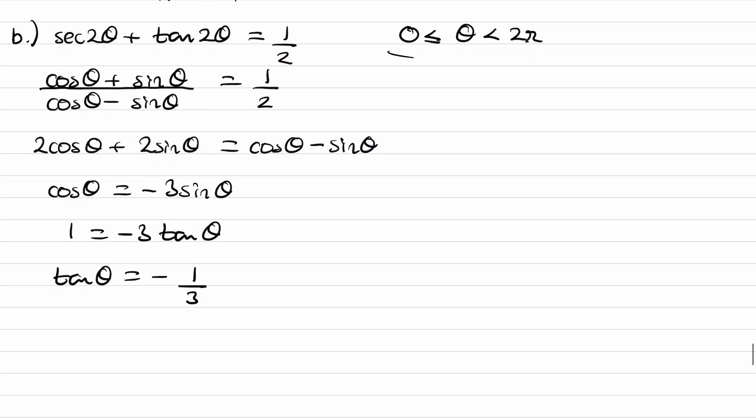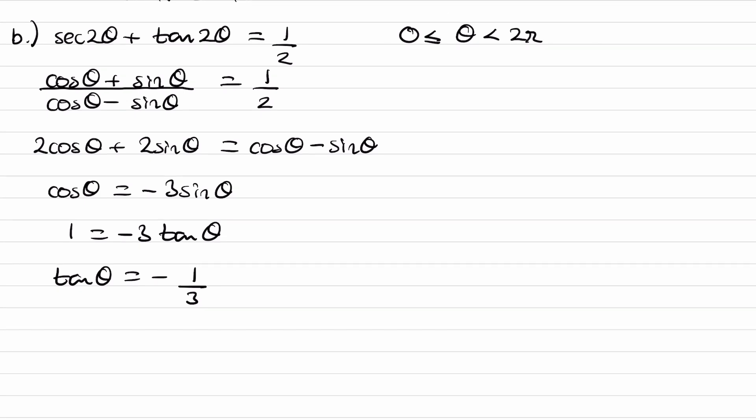We're solving between 0 and 2 pi. Inverse tan of minus 1 third is minus 0.322. And then we can add pi as a tan graph repeats itself every pi radians. Add pi we get 2.820. Add pi again we get 5.961. And our answers need to be between 0 and 2 pi. So then these would be our two final answers. We would disregard the first one.